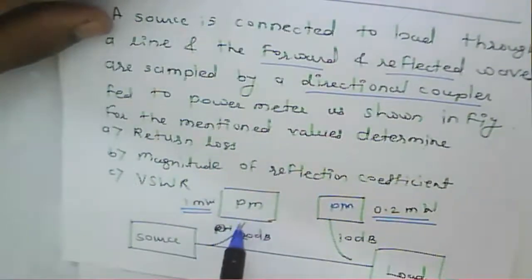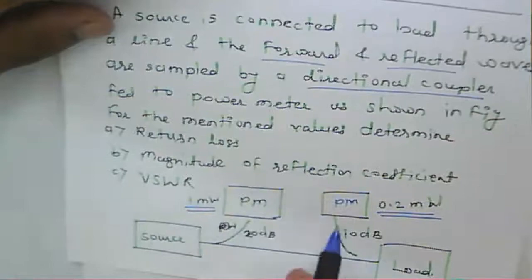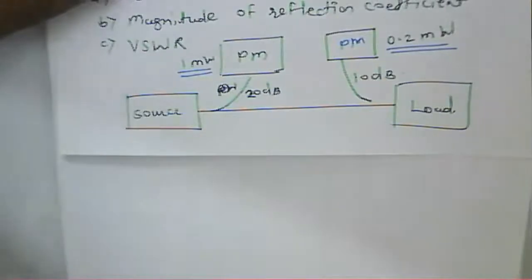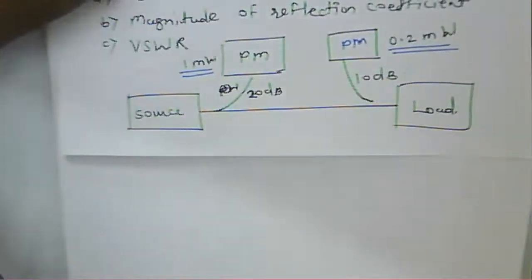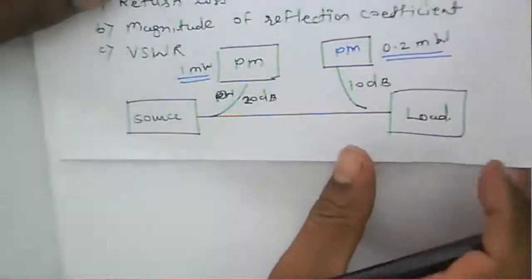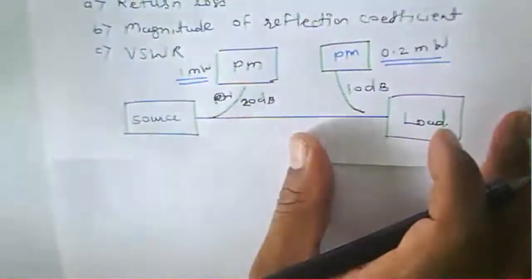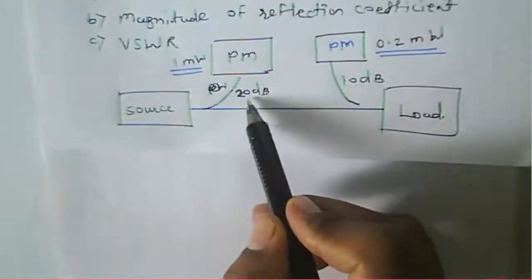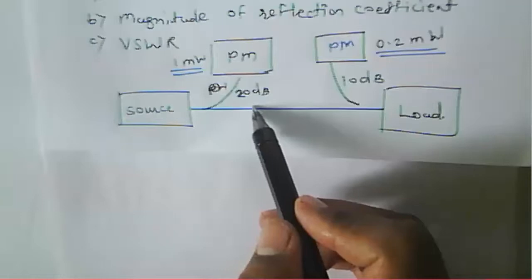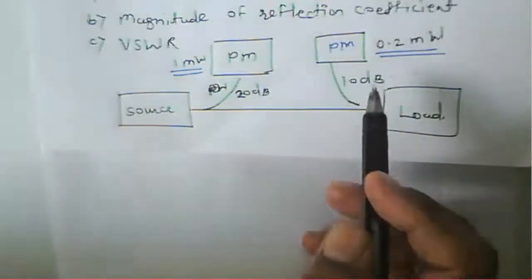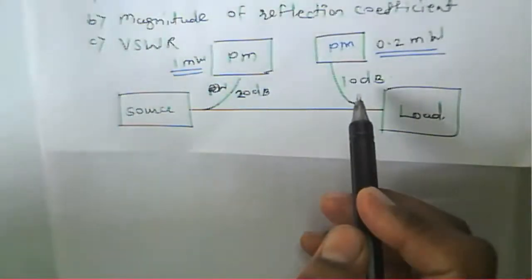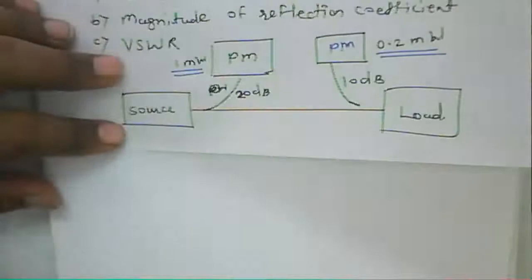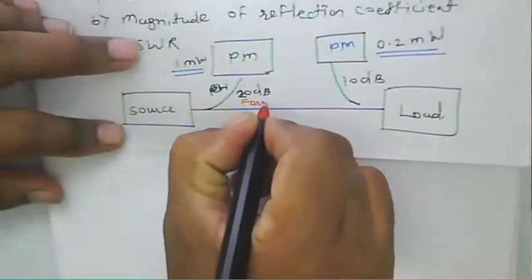The forward wave is sampled, and the input power is given as 20 dB. The reflected power is also noted. So the forward power meter reading and the reflected power meter reading are identified. We need to calculate the incident power. The incident power is computed from 10 log of incident power equal to 20 dB, giving us the incident power.